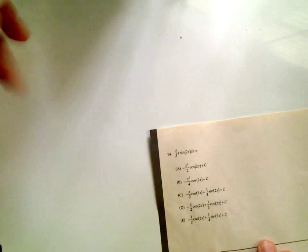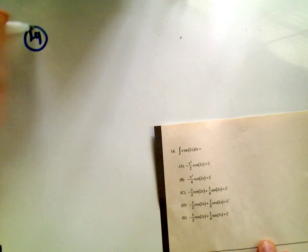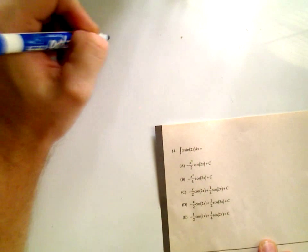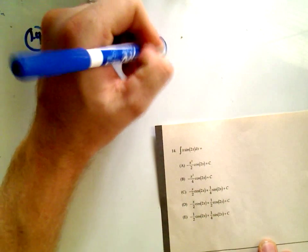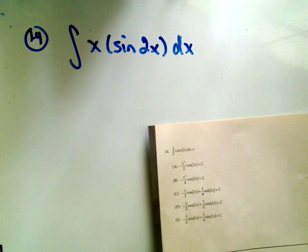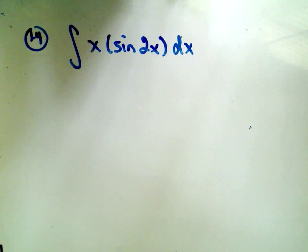Alright, so number 14, here it says we have to integrate the function x sine of 2x dx. So to do this one, this looks like an integration by parts problem.